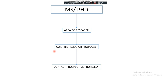After finalizing your research area, you have to compile a research proposal on that specific research branch. For example, I want to do research in material sciences, and within material sciences I want to research the magnetic properties of materials. So I have finalized my research interest — I am going to do my master's or PhD on the magnetic properties of materials.